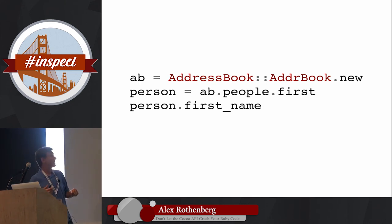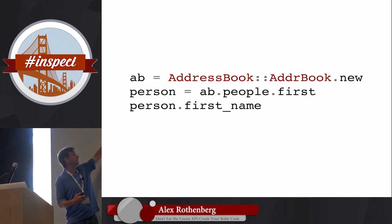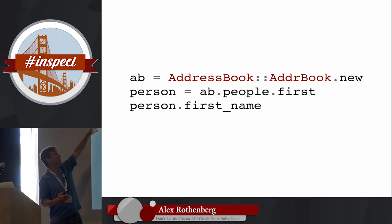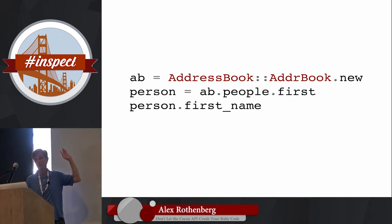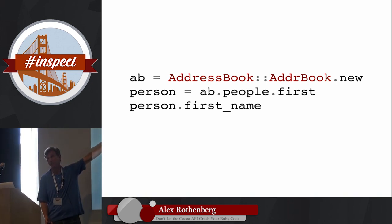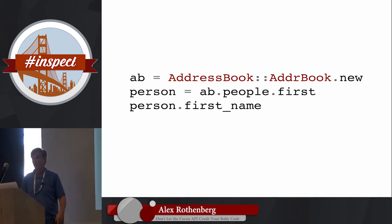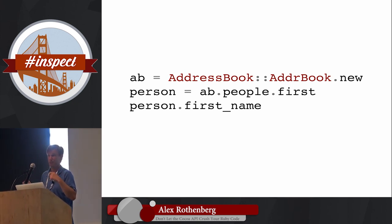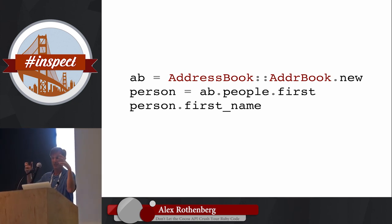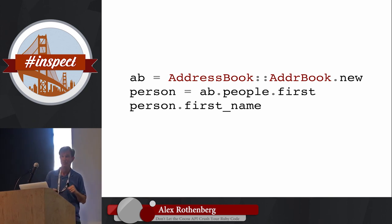If you want to get a person, you can just get the system address book and ask it for an array of all the people. Want to get someone's first name? Just ask them for their first name. Want to change their first name? Just assign it. Want to save them? Just call save. It's a much easier interface to work with.